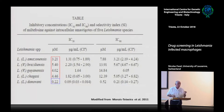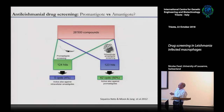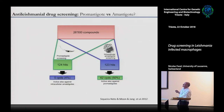In a paper published years ago, they started with 26,000 compounds tested on promastigotes or intracellular amastigotes. Against promastigotes they found around 100 hits; against amastigotes around 123 — roughly the same number. But when they crossed the results — taking promastigote hits and testing on amastigotes — only five compounds worked on amastigotes, whereas about 50% of amastigote hits also worked on promastigotes.